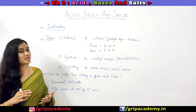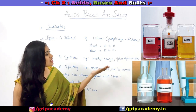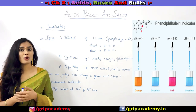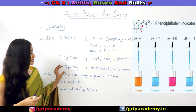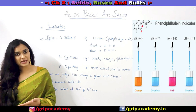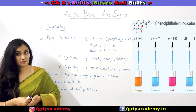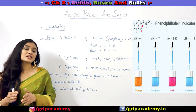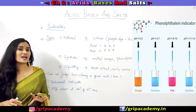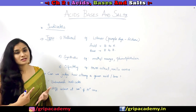Synthetic indicators are those which are not natural — they have been synthesized. Examples are methyl orange and phenolphthalein. Coming to olfactory indicators, these are indicators which change their odor or smell in an acidic or basic medium. When these olfactory indicators are added to a particular acid or base, they will change their characteristic smell. Examples include onion and vanilla — these are all olfactory indicators that change their odor when treated with acid or base. This is how we can determine whether a particular substance is an acid or base.